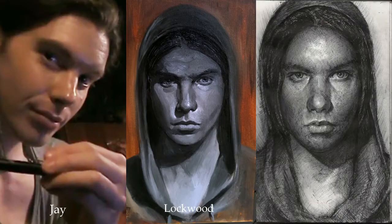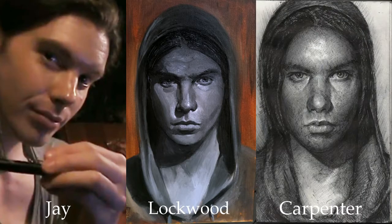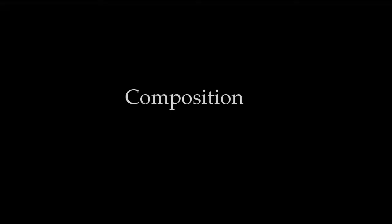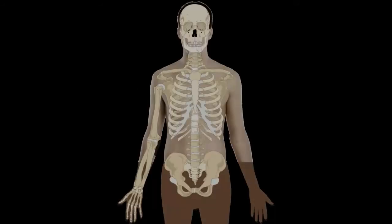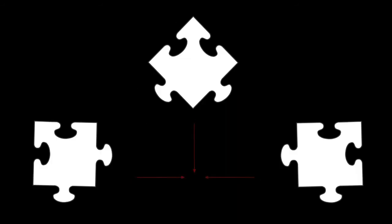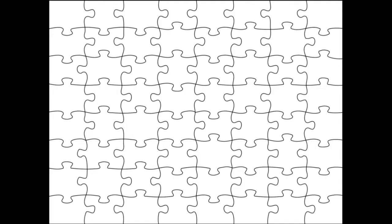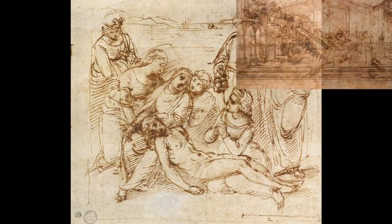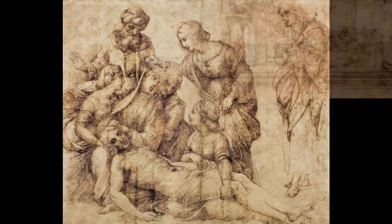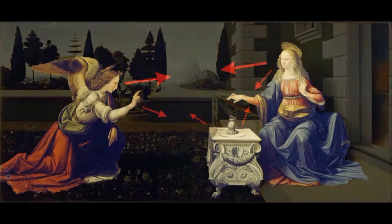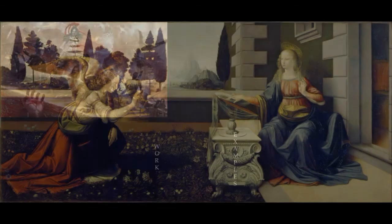Hi, my name is J. Locker Carpenter and this is a brief tutorial on composition. Simply put, composition refers to the individual components that together form a whole. Within art specifically, this is the placement of objects or figures in relation to each other within a scene.